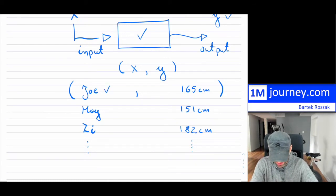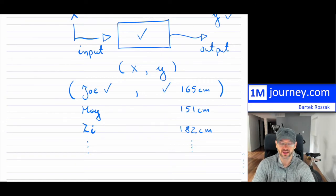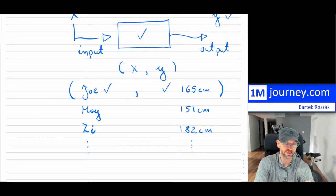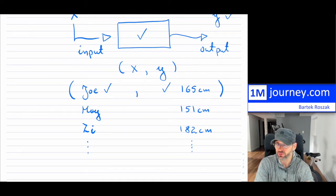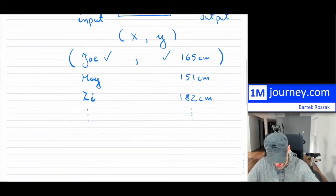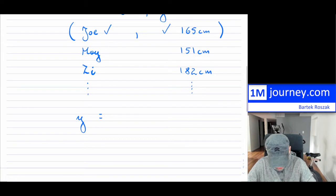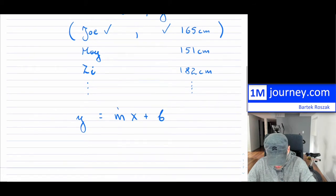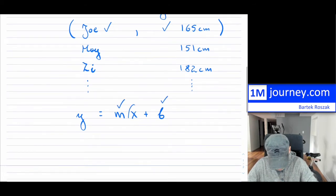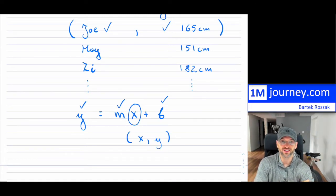So we've created ordered pairs. Here is x which is Joe, the height is 165 — that's my output y. That's my independent variable and the dependent variable, because it depends on Joe's height. You can do these ordered pairs throughout and graph them. Notice that Joe, May, and Z are not necessarily numbers. In math, as you go through, your inputs and outputs start to be related in a numerical way. Some of the relations you've studied include the linear relationship: y = mx + b, where m is your slope, b is your y-intercept, x is your input, and y is your output.